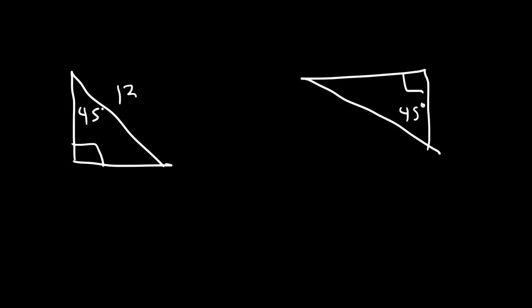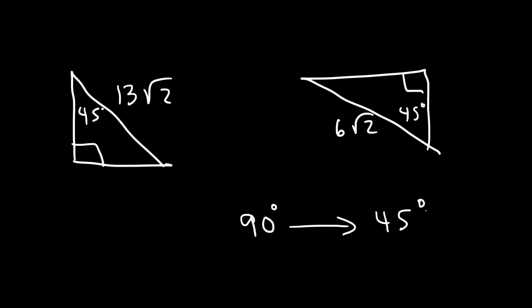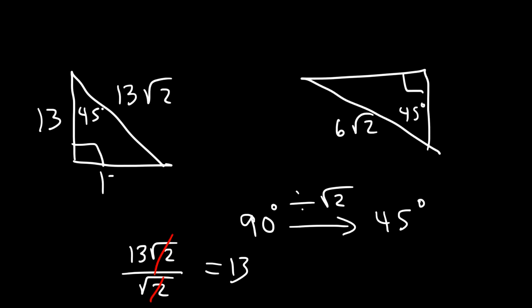This time you're given the hypotenuse — find the missing sides of these two triangles. We have the side across the 90-degree angle and want the side across the 45-degree angle, so we divide by √2. Taking 13√2 divided by √2, the √2 terms cancel and we get 13 — both legs are 13. For the other triangle, 6√2 divided by √2 gives us 6 for both legs.